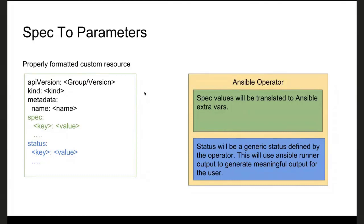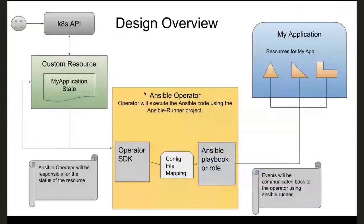The Ansible operator also takes a first stab at managing the status for the operator author. Since operators are supposed to own statuses, we thought it was important to do this. Because of Ansible Runner we're able to get structured output about what is happening in the Ansible run and surface that to the user who just wants to look at the custom resource they created.